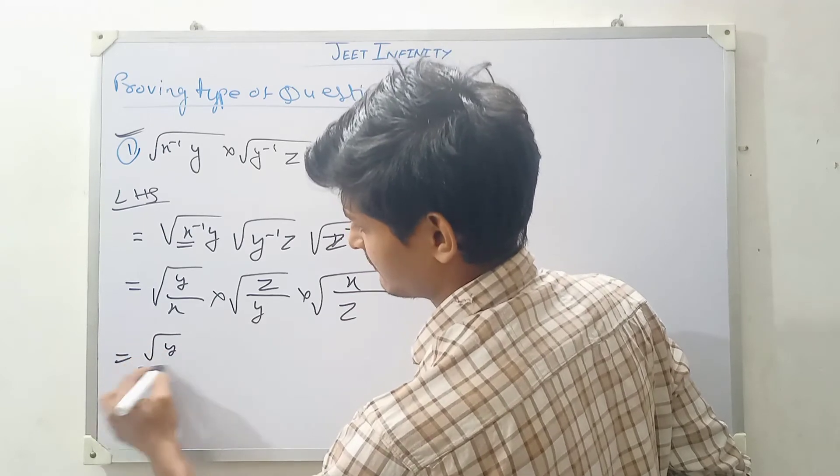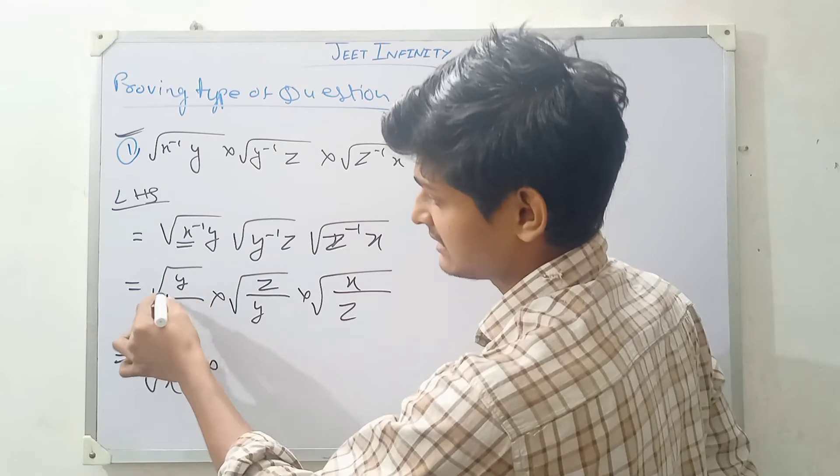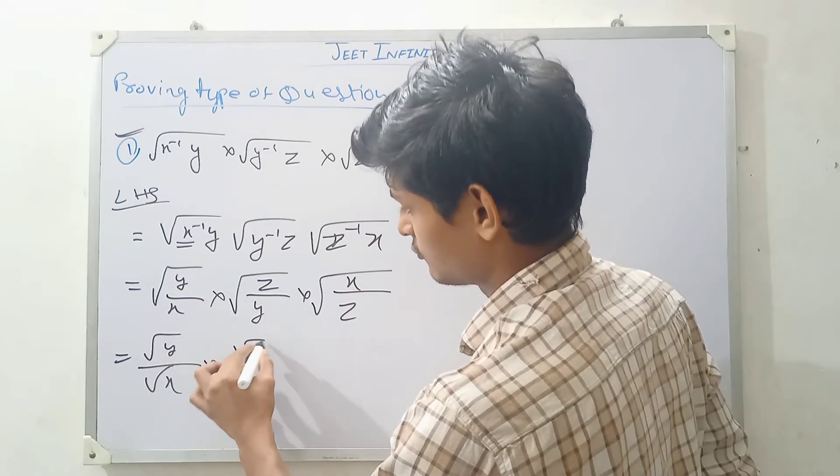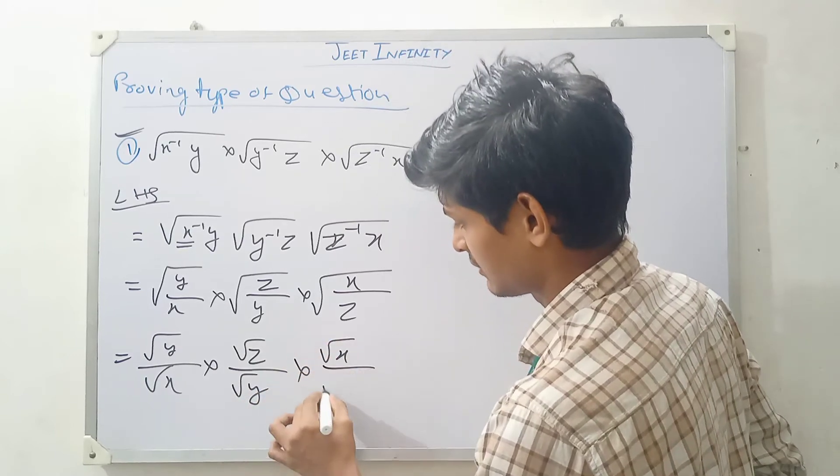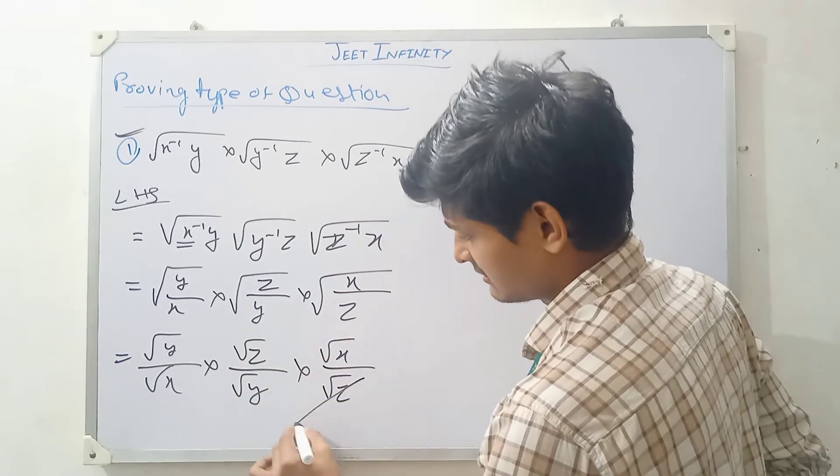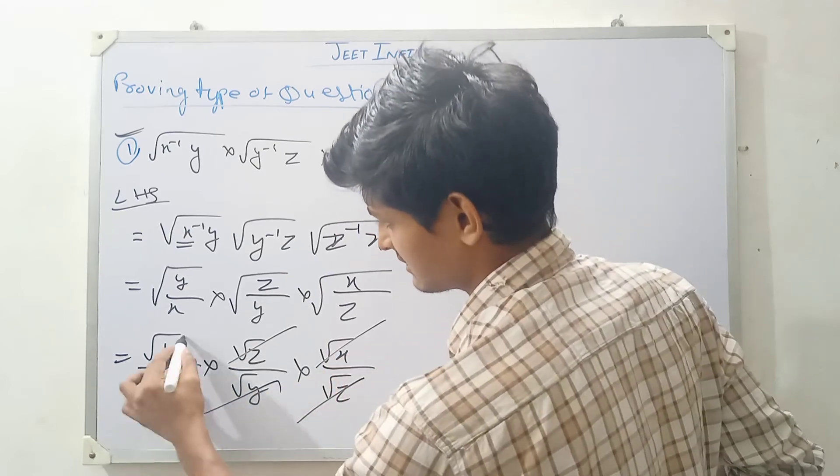Then Y by root over X and then this quantity is cancelled out. This and this is cancelled out. Okay, root Z by root Y and then here root X, root X, root Z. This quantity, this quantity is cancelled out. This and this cancelled out and this and this cancelled out.